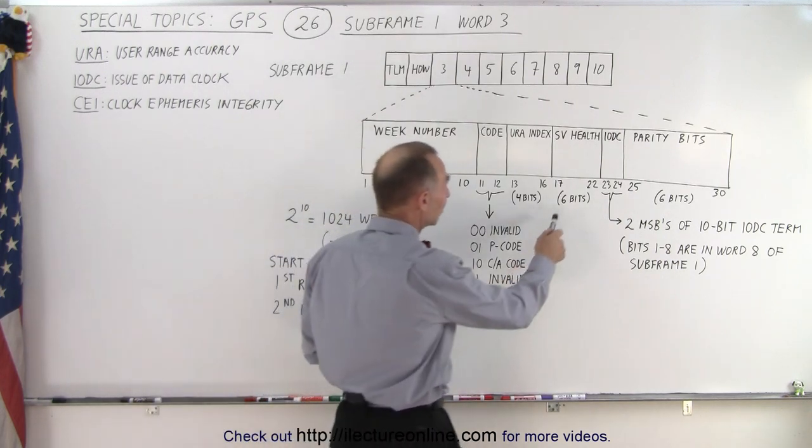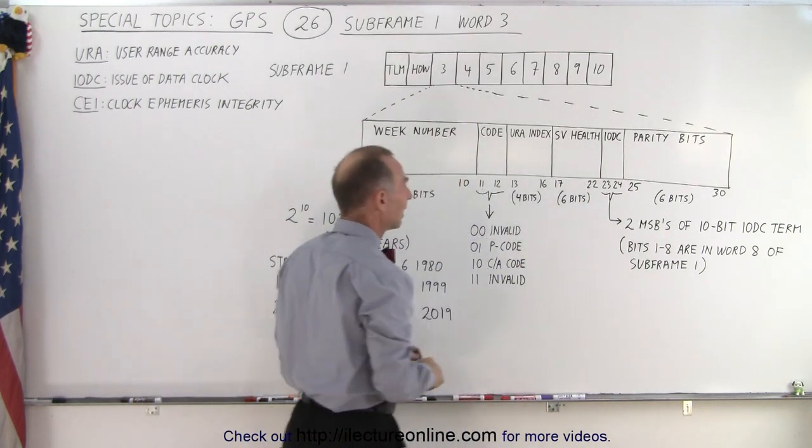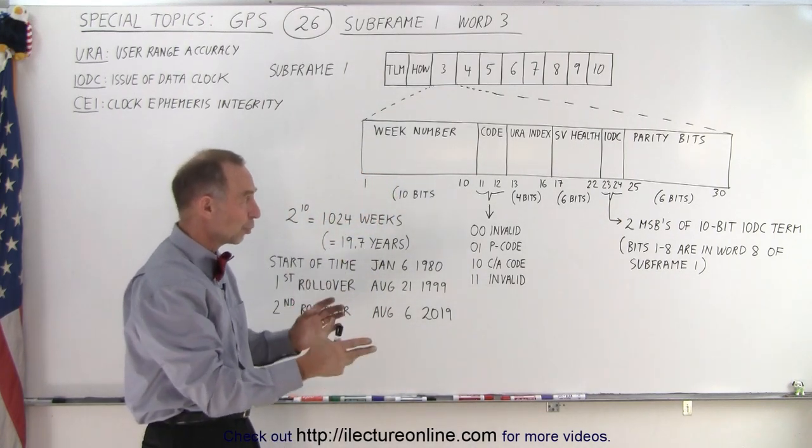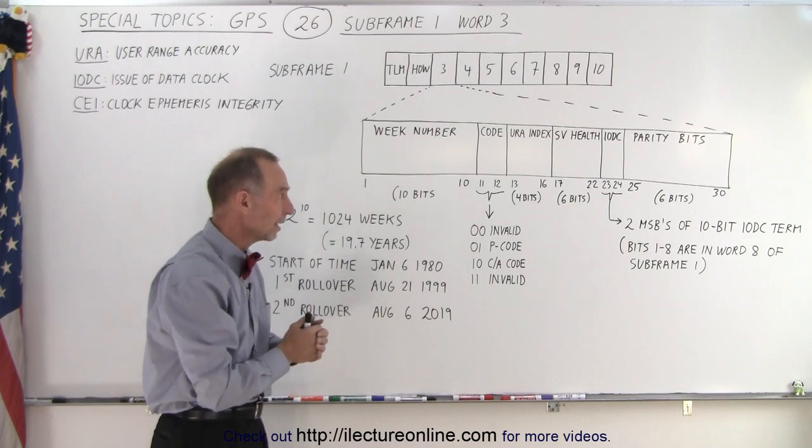The next six bits are the SV Health and again that's six bits, a lot of different codes we can have there and we'll show you in a video what the contents of that is as well.